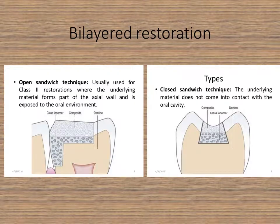Coming to the bilayered restoration — this is a very popular technique because it combines the properties of both glass ionomer and composite restorations. There have been many debates about whether it can be performed on the same day. My personal recommendation is to do it in two sittings, not one. The reason is that the final setting time for glass ionomer cement is 24 hours, so if you immediately start acid etching and washing, you might wash away important components of the GIC before the complexes can form.